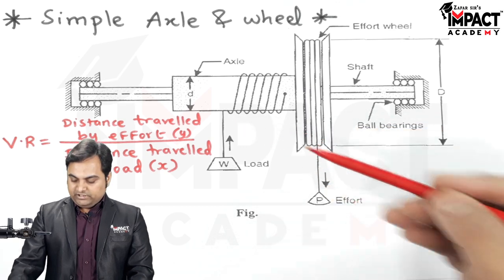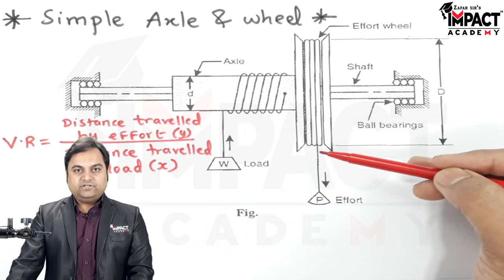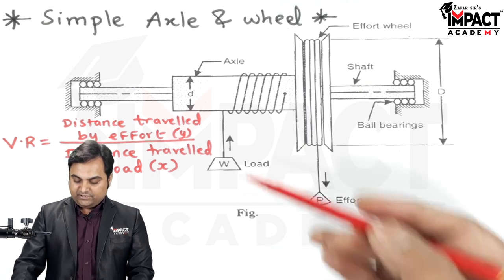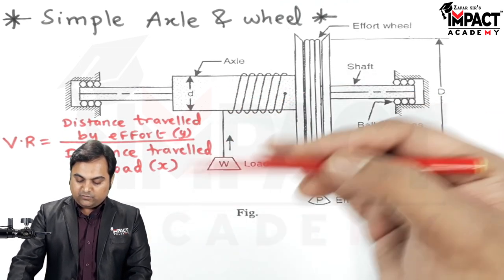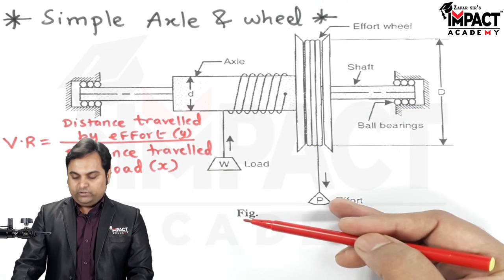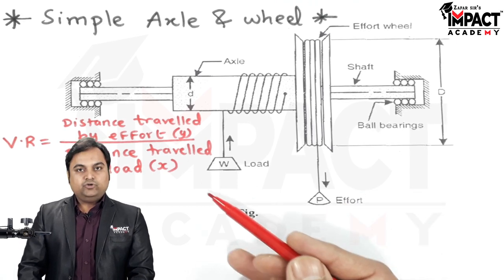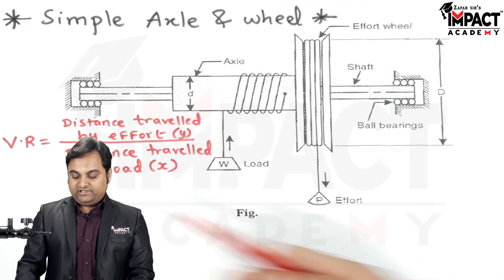Similarly if we release this rope then the effort wheel would be rotating in an opposite direction and the rope would be unwinding and the load would be lowered. So by applying a really small effort we can lift a huge amount of load. So this is called as a simple machine.